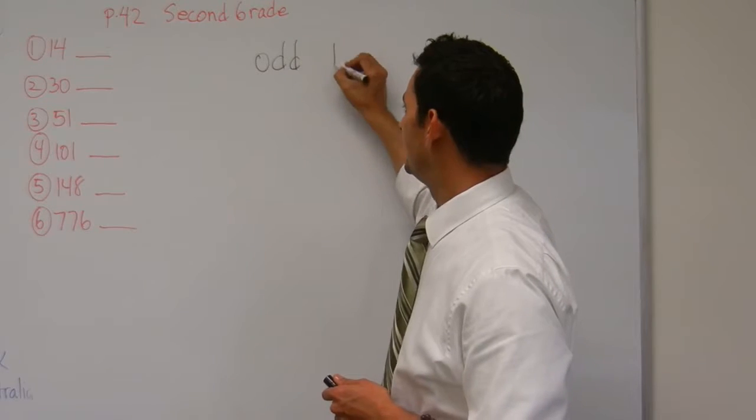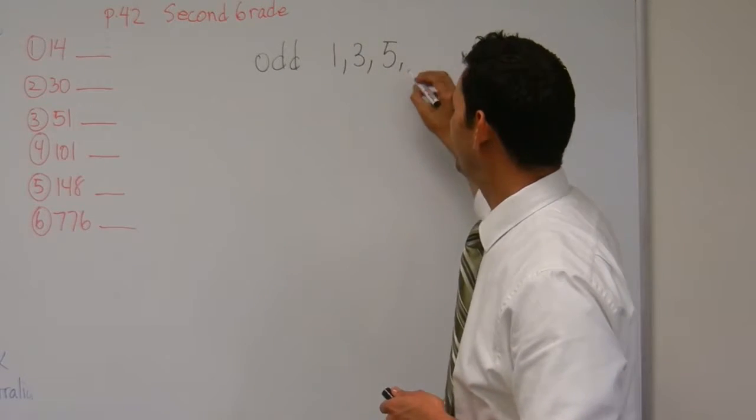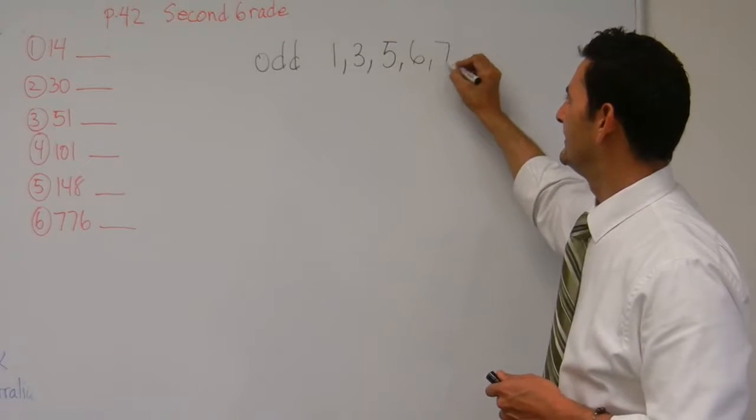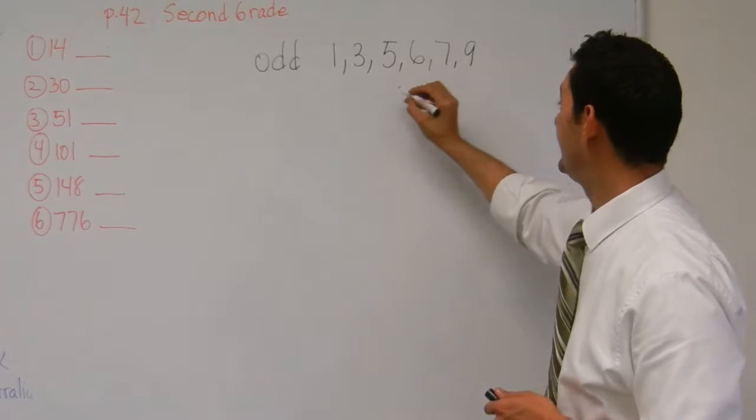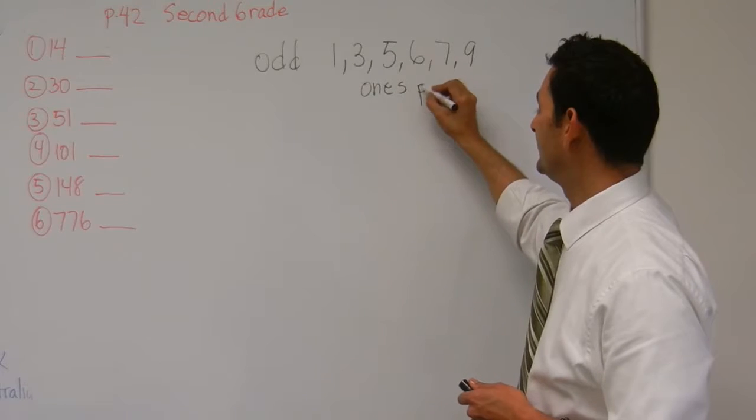Odd numbers have a 1, have a 3, have a 5, have a 6, have a 7, and have a 9 in the ones place.